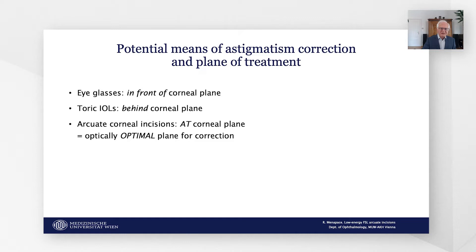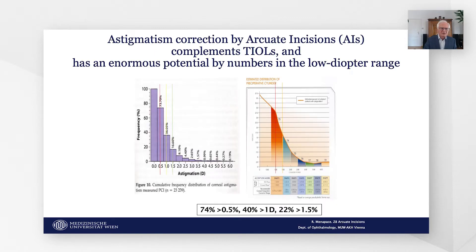While toric lenses correct astigmatism behind the corneal plane, arcuate incisions correct it in the corneal plane itself, which is the optimum plane for correction. Astigmatism correction by arcuate incisions complements toric intraocular lenses and has enormous potential in the low diopter range. About 20% of eyes exhibit a corneal astigmatism of 1 to 1.5 diopters, which significantly reduces uncorrected visual acuity with monofocal IOLs, particularly when the axis is oblique.